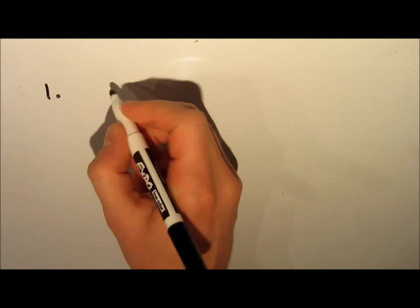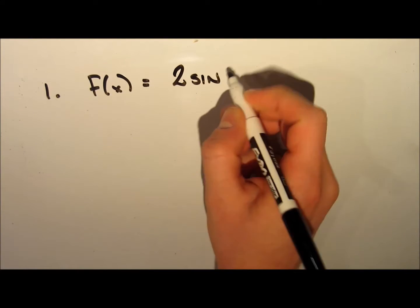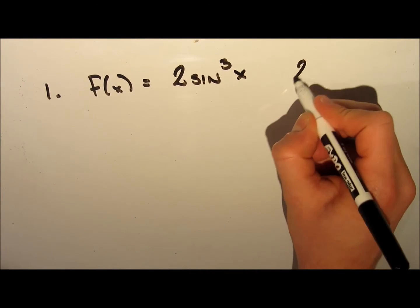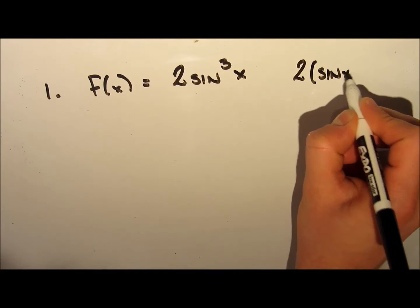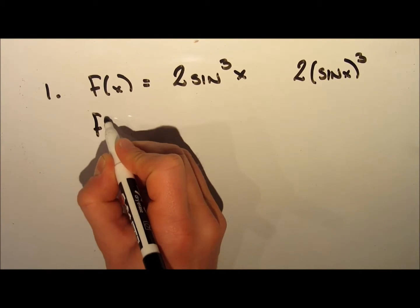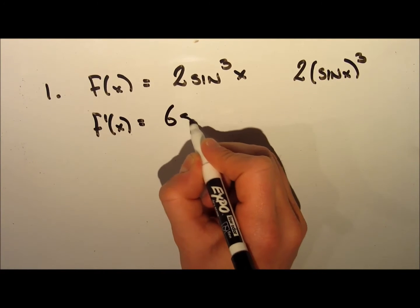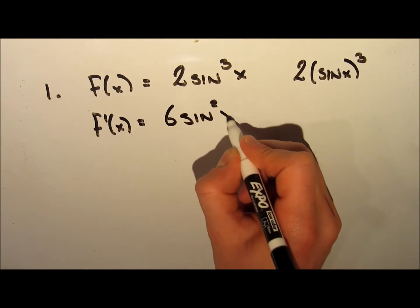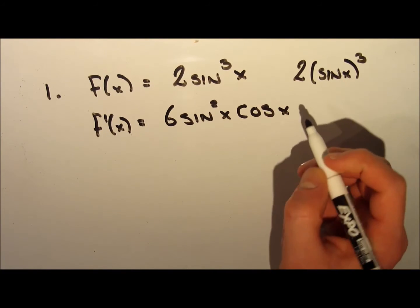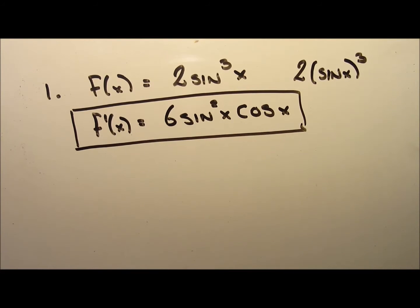Now let's take a look at a couple of examples. In our first example we want to find the derivative of f of x equal to 2 sine cubed x. We can look at this as 2 multiplied by a composite function to the exponent 3. When we take the derivative, we follow the chain rule and the power rule. We take the exponent down and multiply by the coefficient — 3 times 2 — subtract 1 from the exponent giving sine squared x, then multiply by the derivative of the inside function. The derivative of sine x is cosine x, and this gives us our answer.